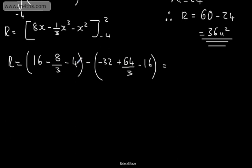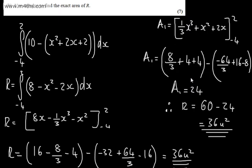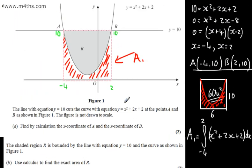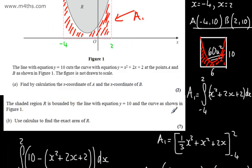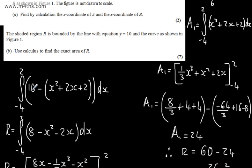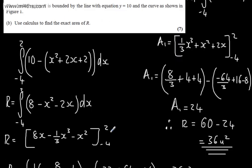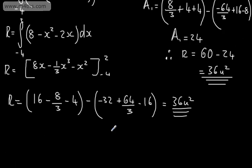You might want to tidy each of these up and show full workings given the marks on offer. That gives us two different ways to do the second part of the question: either find the area under the curve and subtract from the rectangle, or integrate (line minus curve) directly, since the curve is below the line in this interval. Either way, we end up with R equals 36.